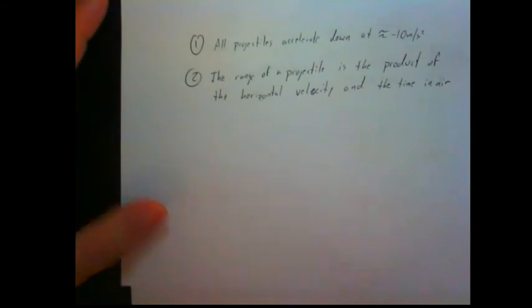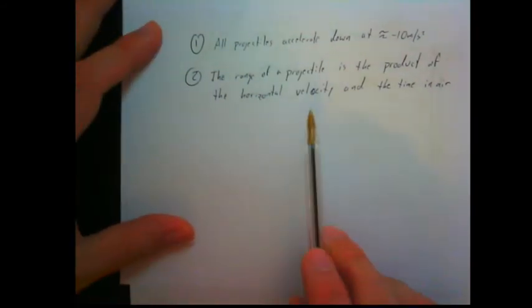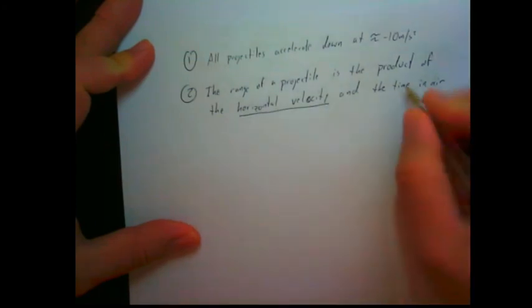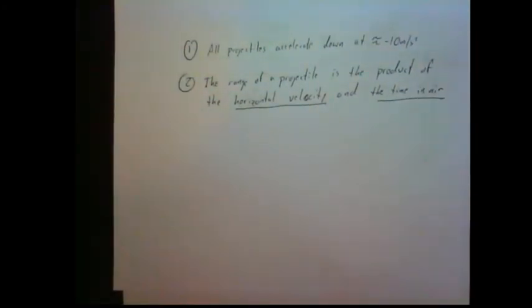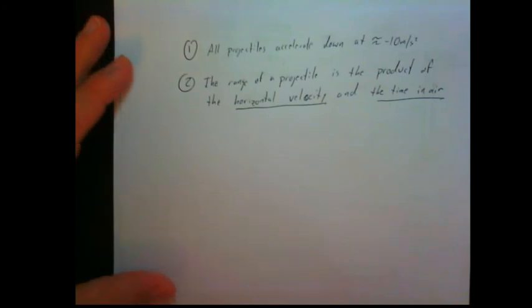Number two, the range of a projectile is the product of the horizontal velocity and the time in the air. And by product I mean it's the result of multiplying them together, right? Horizontal velocity and the time in the air. A projectile of any sort, all we have to do to figure out how far it goes is multiply the horizontal velocity by the time in the air.